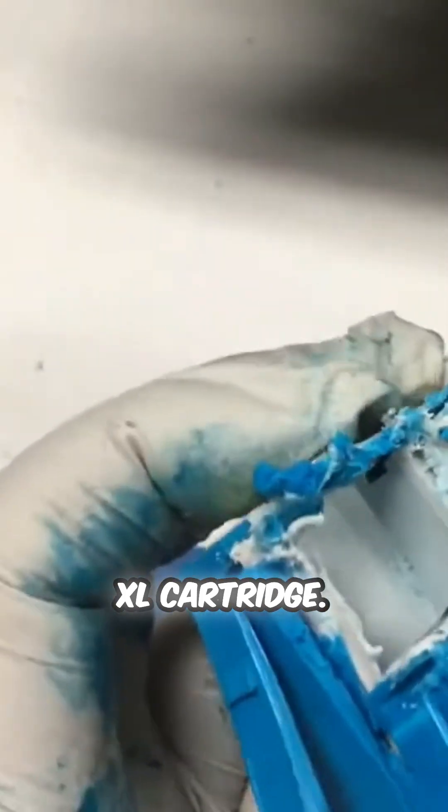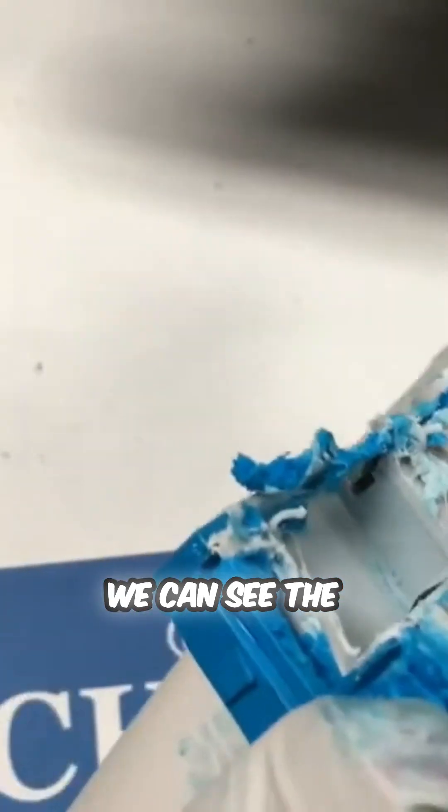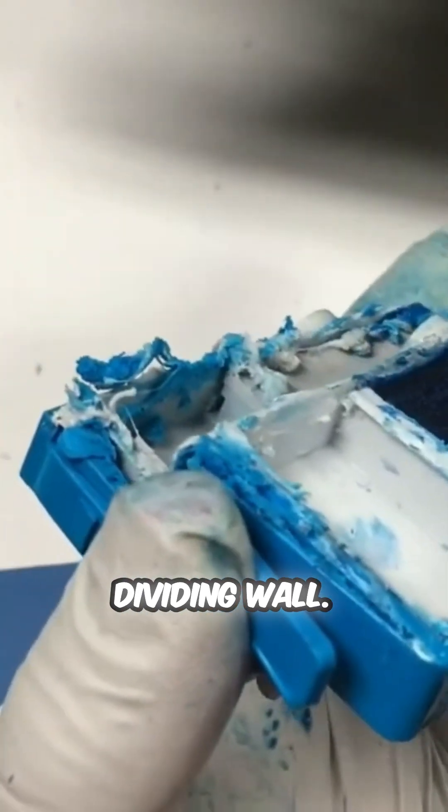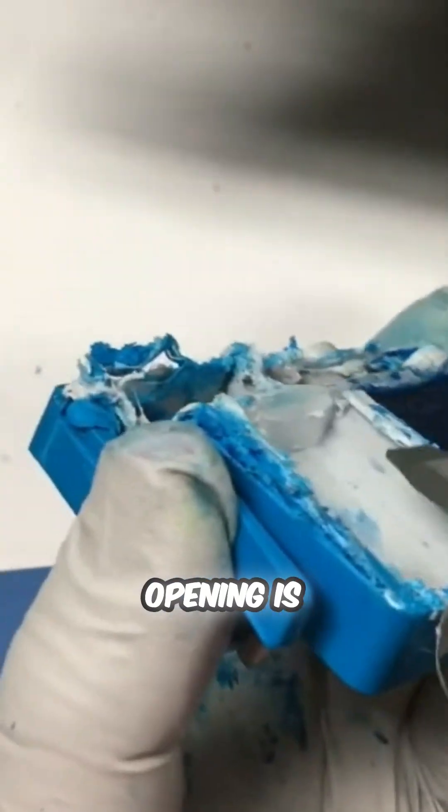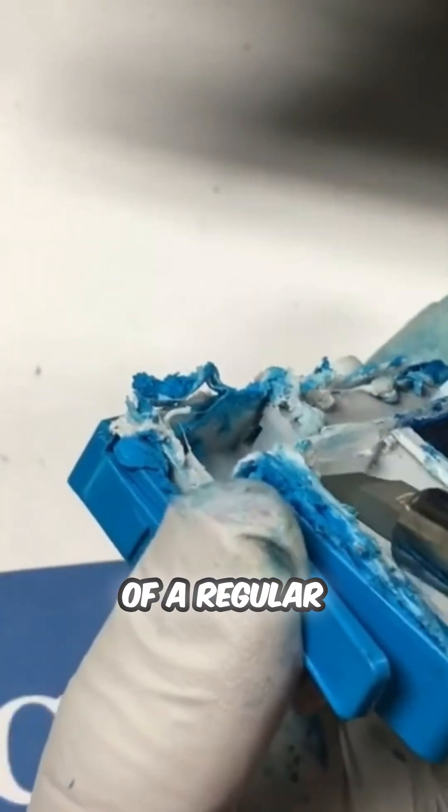We cut open an XL cartridge. We can see the opening at the bottom of the dividing wall, but the same opening is placed on top of a regular cartridge.